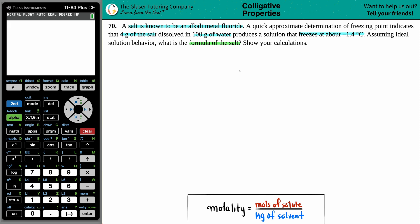Alright, so basically we have to find the formula of the appropriate salt here. Now the only thing we know about this salt is that it is an alkali metal fluoride. So let's just write that out. We know that it's an alkali metal plus a fluoride.